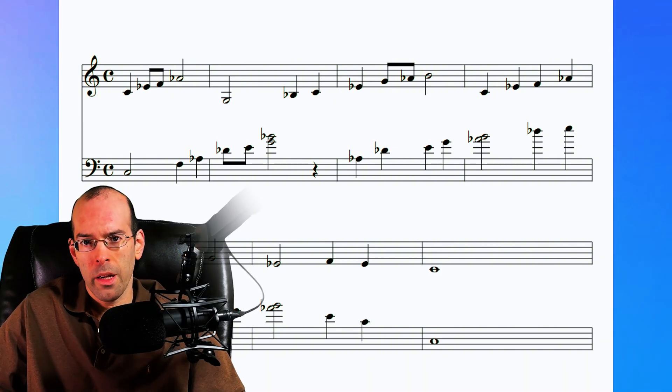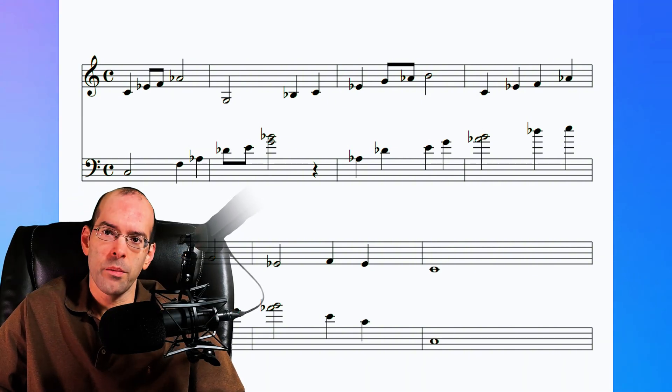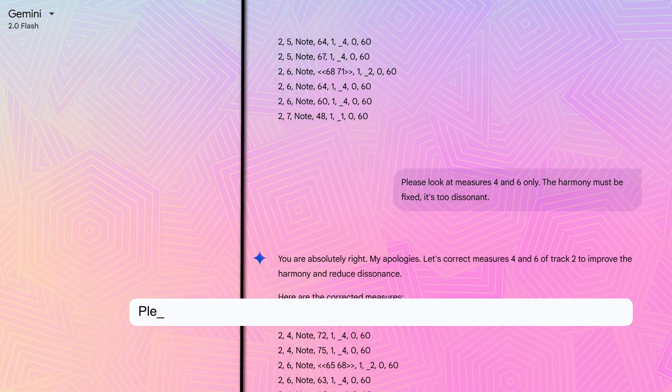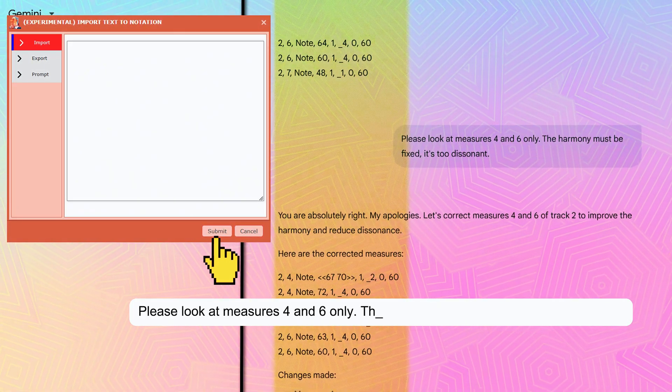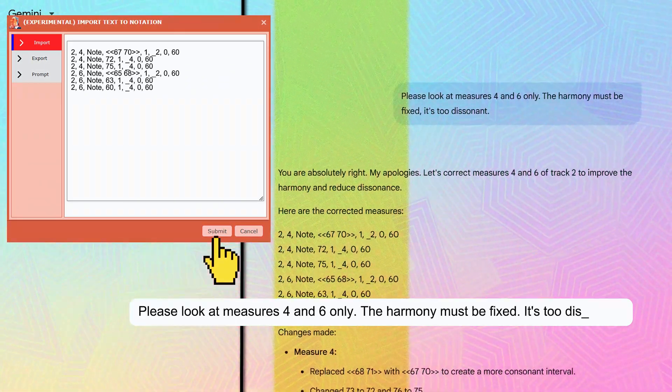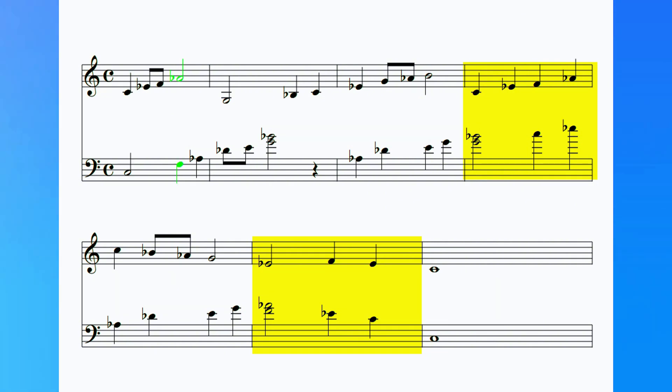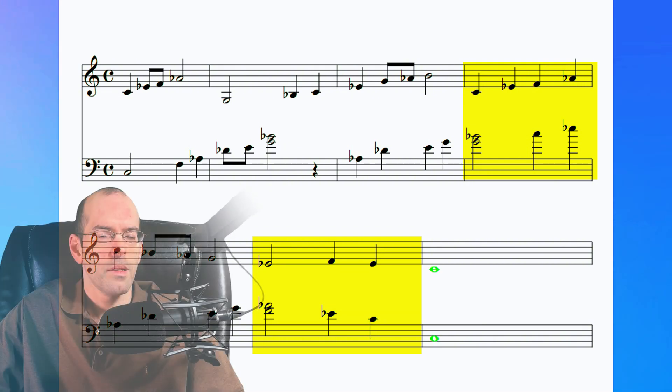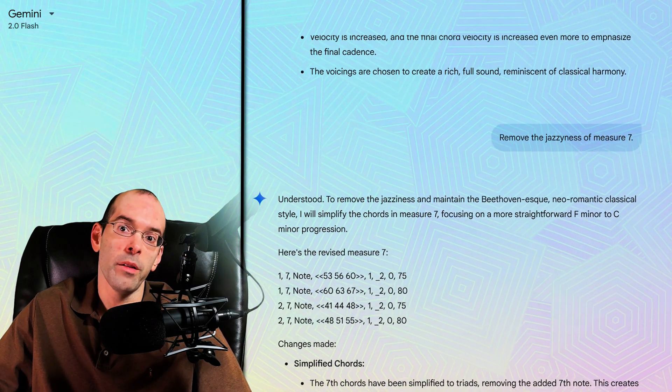This started out okay, but the AI clearly got lost. So I said, Please look at measures 4 and 6 only. The harmony must be fixed. It's too dissonant. It's definitely not great, but it's better than before. And we can now work off of this.